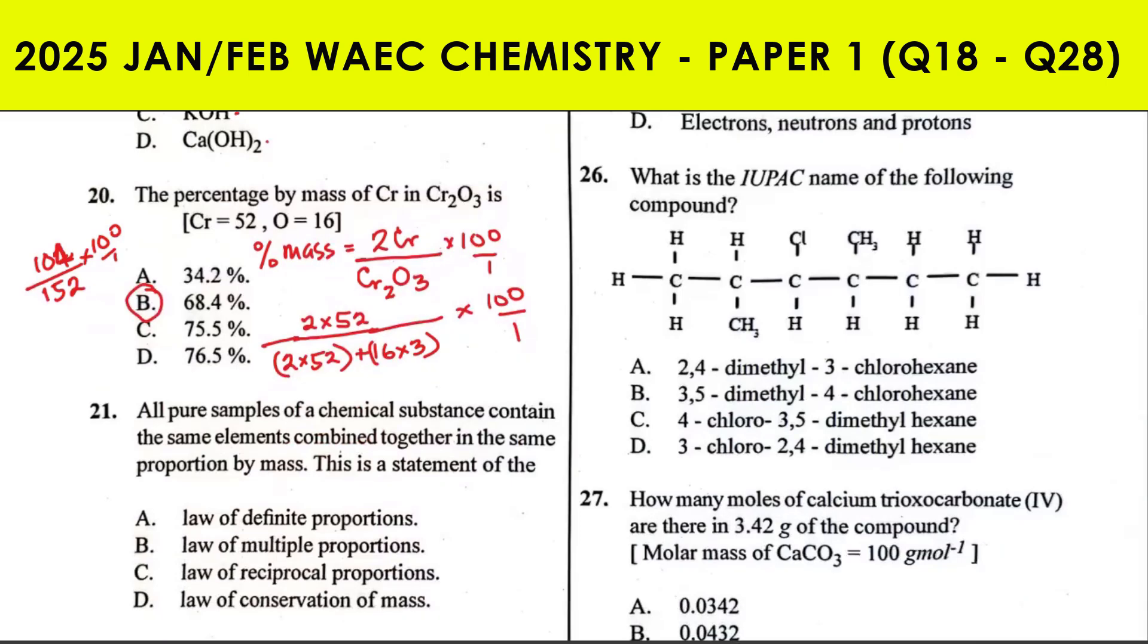Question 21 says all pure samples of a chemical substance contain the same elements combined together in the same proportion by mass. This is the statement of the law of definite proportions.